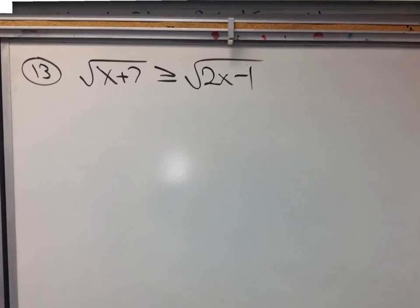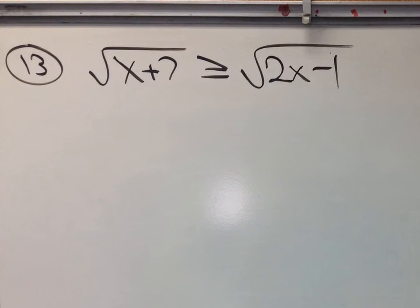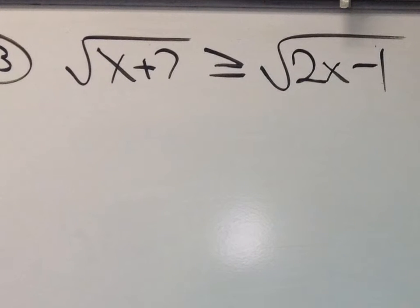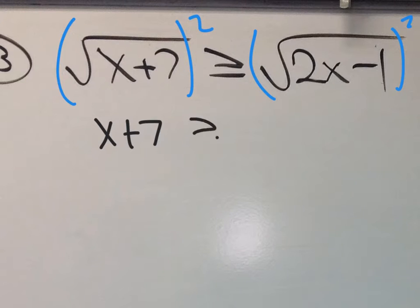So if we look at number 13 from our worksheet this will help us out. How do you solve this thing? Well you simply square both sides and when you square both sides you end up with x plus 7 greater than or equal to 2x minus 1.